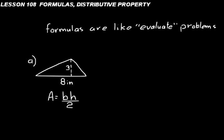That formula is in the table in this lesson. So what you do is just substitute in. The base of that triangle is the bottom of it — that's what the B stands for, so that's 8. The height is that dashed line perpendicular to the base, showing how tall the triangle is. It's 3 inches tall. So we say 8 times 3 divided by 2.